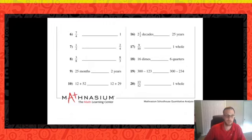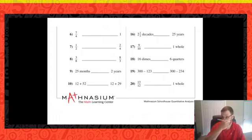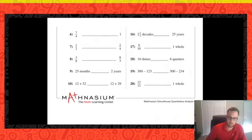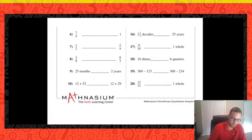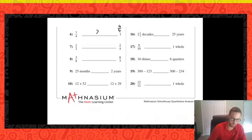Last page, problem six: improper fraction seven fourths compared to one whole. Four fourths is the same as one. Since seven is larger than four, the numerator is bigger — so seven fourths is greater than one whole.